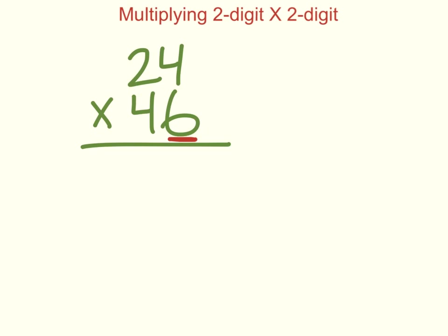So we're going to go six times four. Six times four is 24, so I put my four here and I carry my two. Now I'm going to multiply the six in my ones place value on the bottom number times the two in the tens place value on the top number. Six times two is twelve, plus the two that I carried, which makes fourteen. That's the first step.